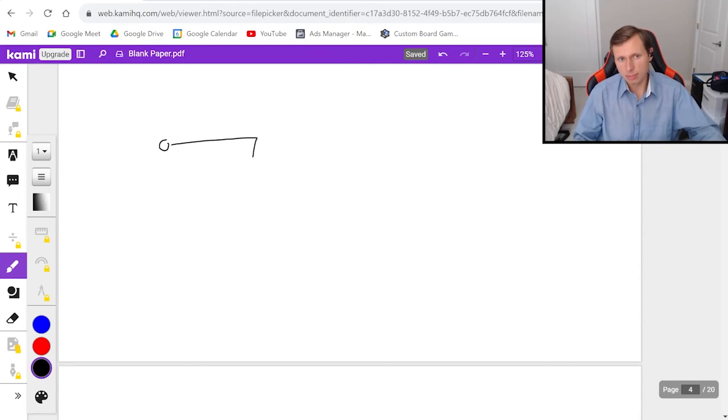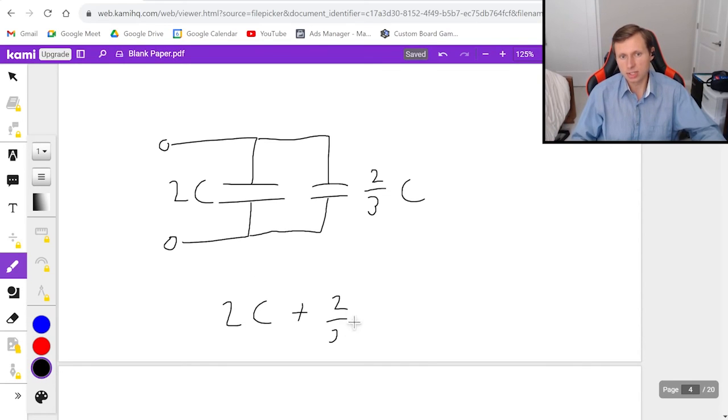So then now I'm just down to two capacitors left. I've got my 2C right here, and right here I've got my 2 thirds C. And since these two are in parallel this is going to be very easy to add. I'm just going to add them directly. It's going to be 2C plus 2 thirds C.